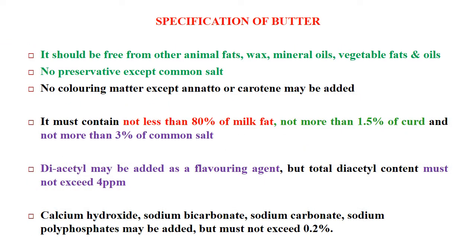Now let us see some specifications of butter. Firstly it should be free from other animal fats, wax, animal oils, vegetable fats and oils. No preservative except common salt. No coloring matter except annatto or carotene may be added. It must contain not less than 80% milk fat, not more than 1.5% curd and not more than 3% common salt. Diacetyl may be added as a flavoring agent but total diacetyl content must not exceed 4 ppm. Calcium hydroxide, sodium bicarbonate, sodium carbonate, and sodium polyphosphates may be added but must not exceed 0.2%.